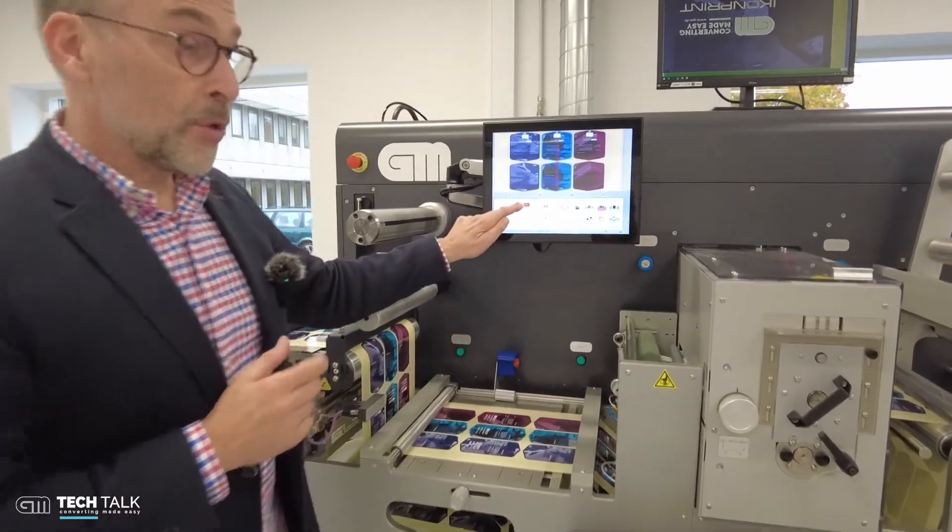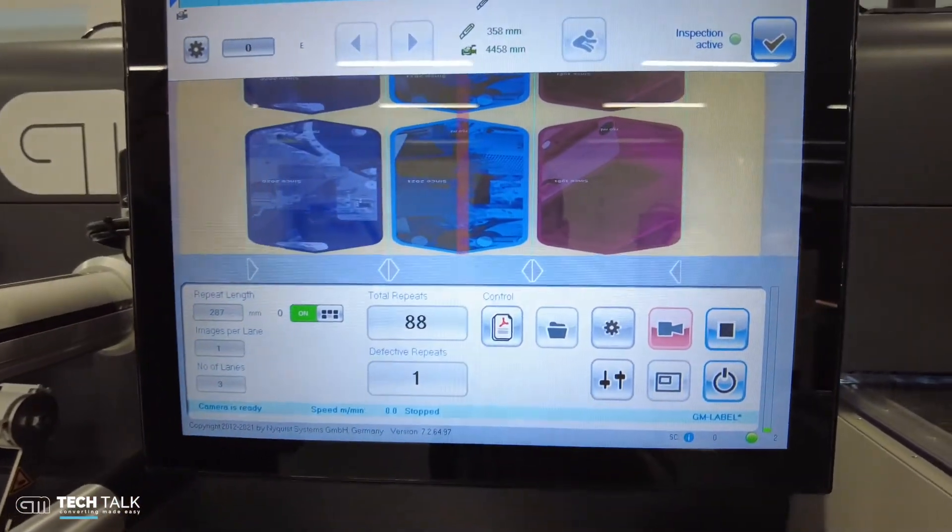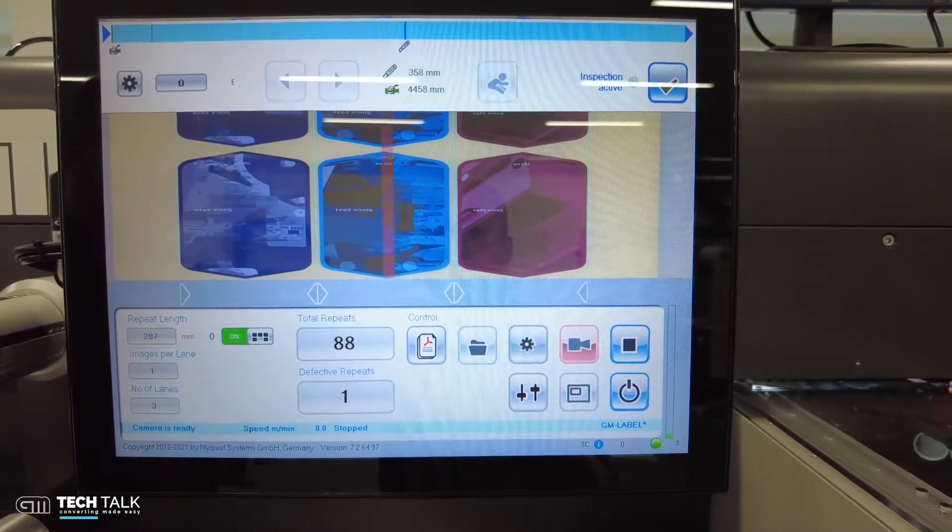In order to run the system we activate the defect detection mode. Now the system is ready to do 100% inspection of your web.